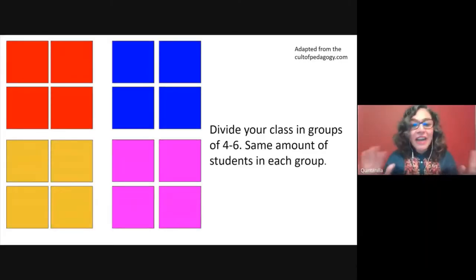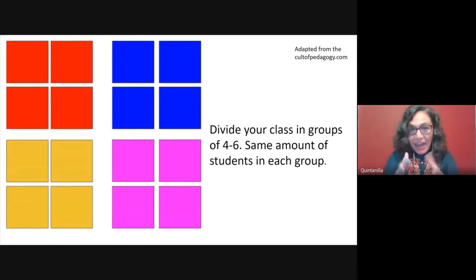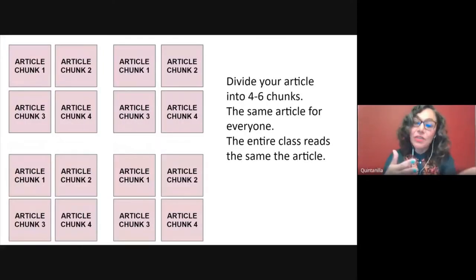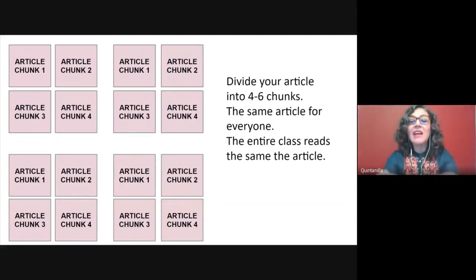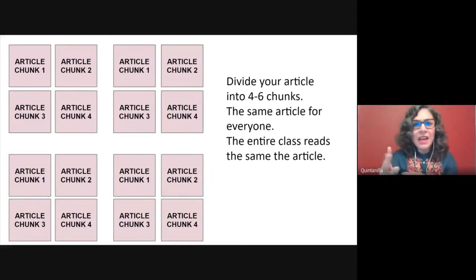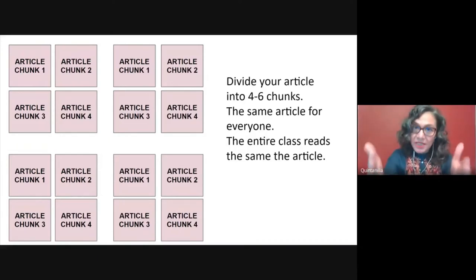Start by dividing your students into groups of four, five, or six students. Jigsaw works better when you have the same number of students in each group. Now that you have divided your students, divide your text. It's important to divide your text into the same number of sections as the number of students in your groups. If you cannot divide your students into perfectly even groups, it's okay — just assign two students the same section, and those two students will be responsible for the same section.